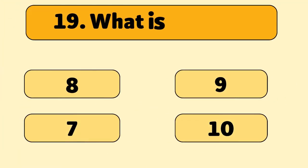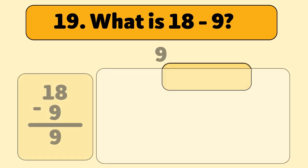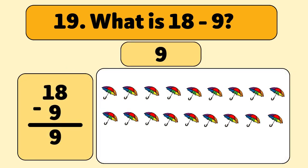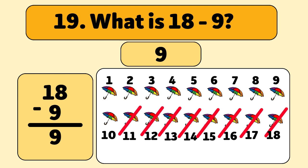What is 18 minus nine? The answer is nine. We start with 18 umbrellas and take away nine. Let's count. One, two, three, four, five, six, seven, eight, nine. We have nine umbrellas left.